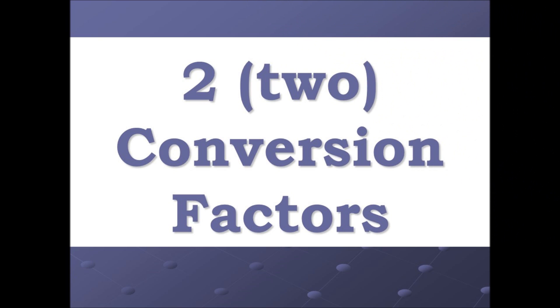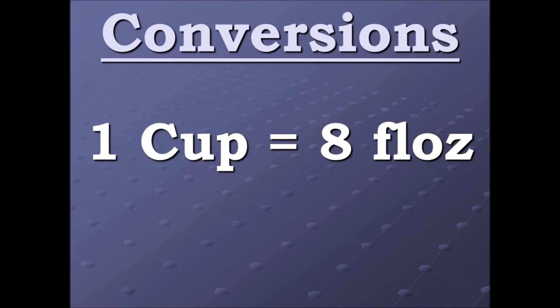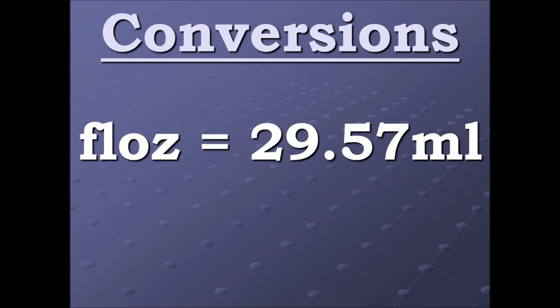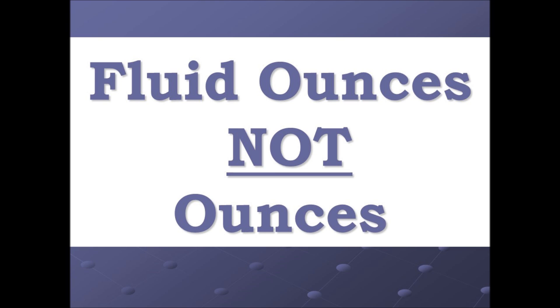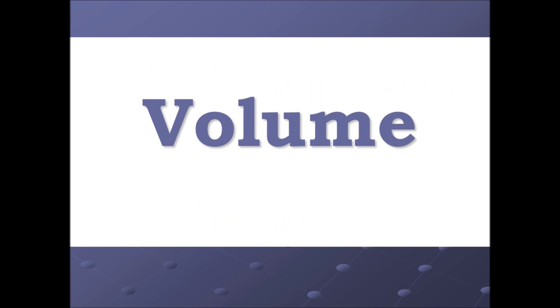We will need two conversion factors. The first one: one cup equals eight fluid ounces. The second one: one fluid ounce equals 29.57 milliliters. Quick point — fluid ounces are not the same as ounces. We're dealing with volume in this video.